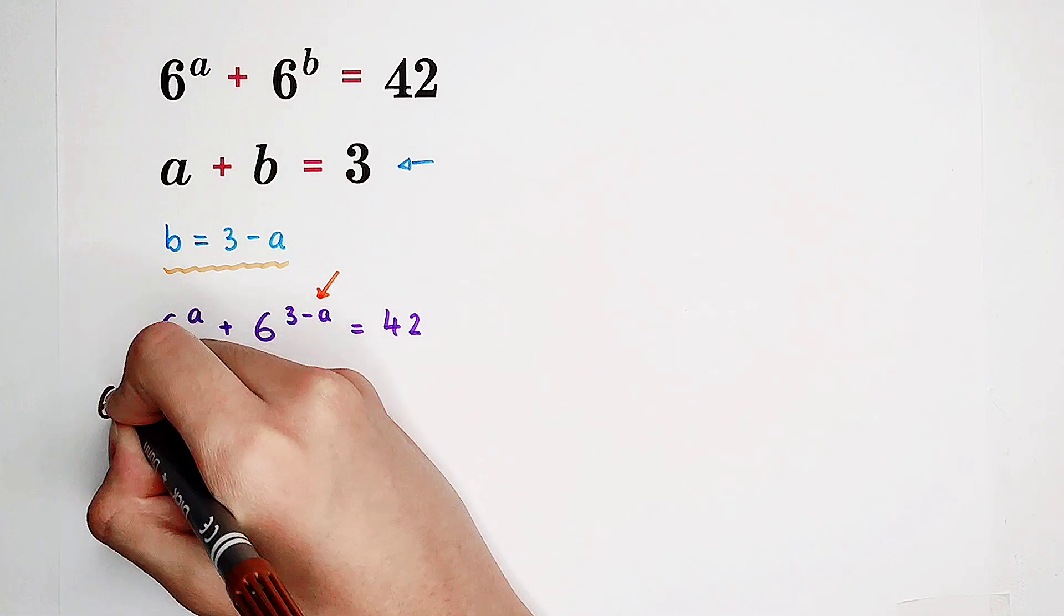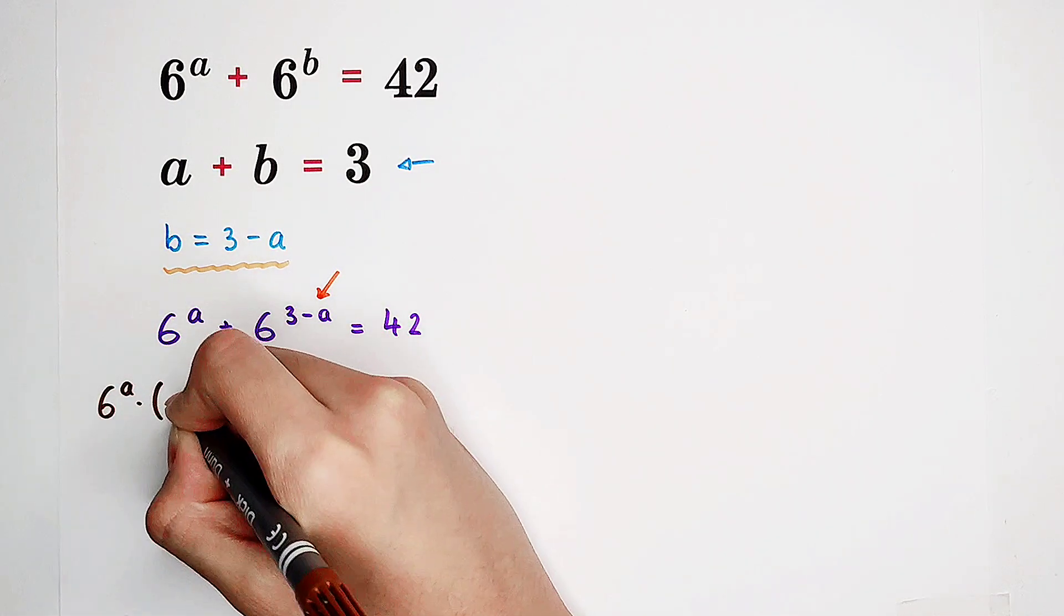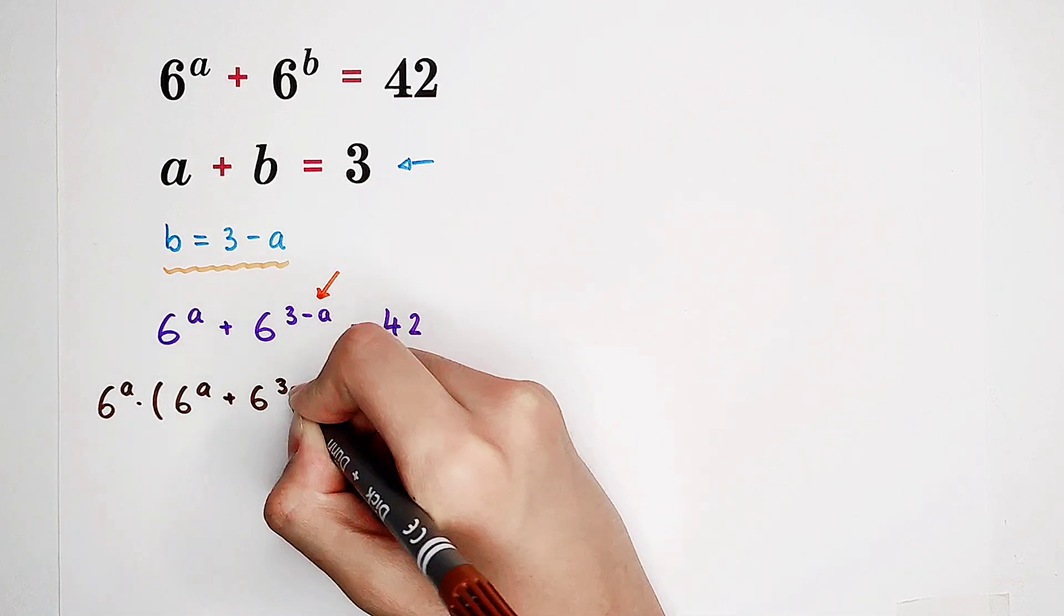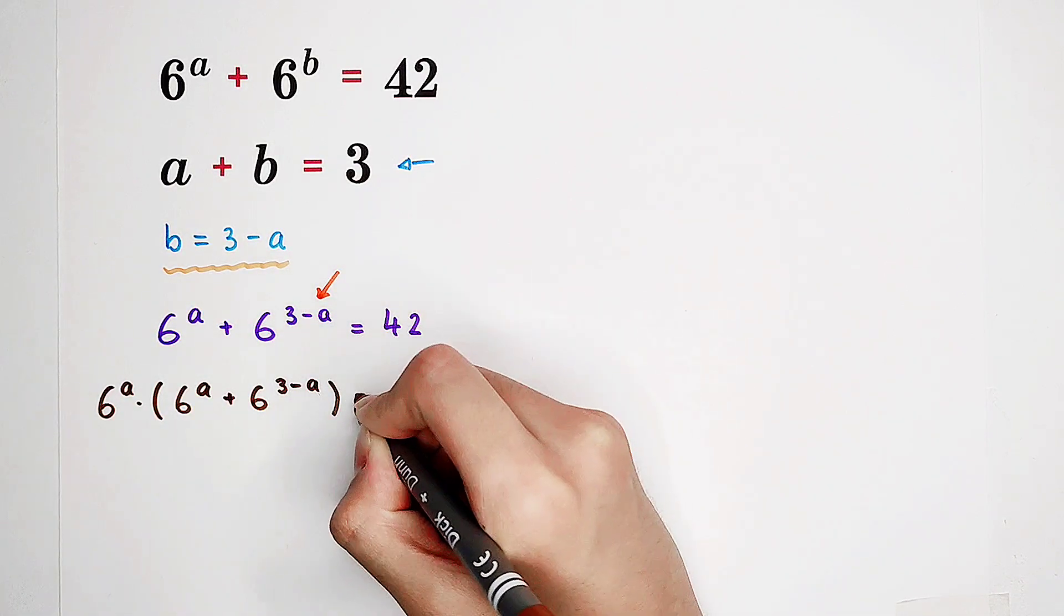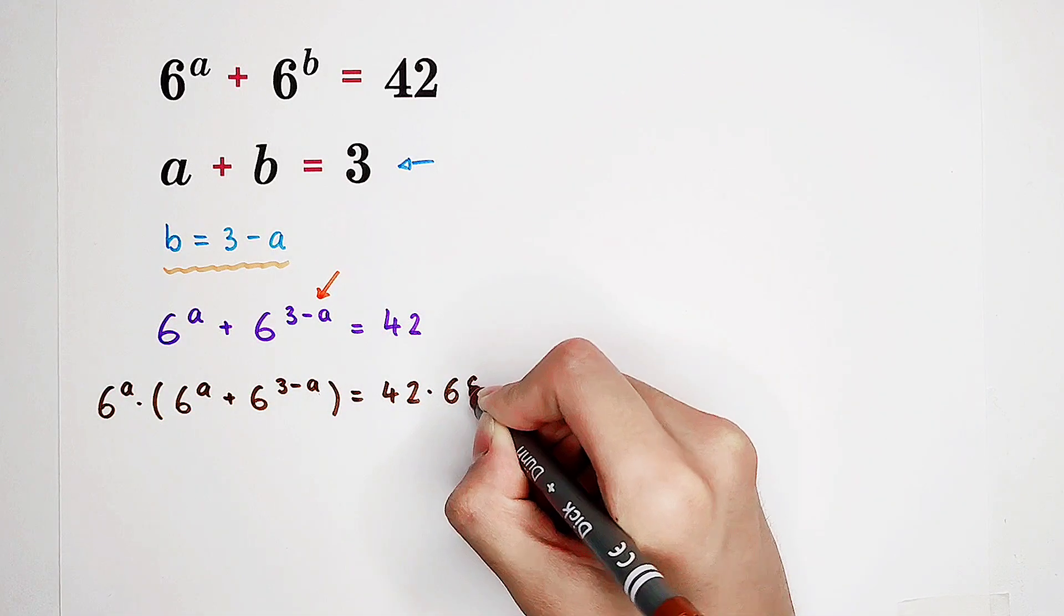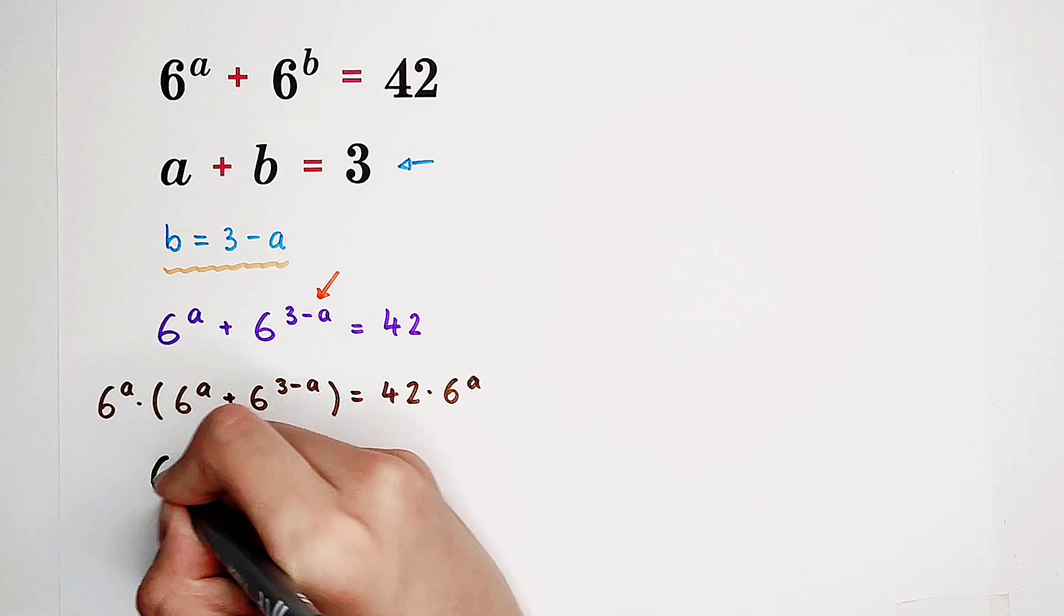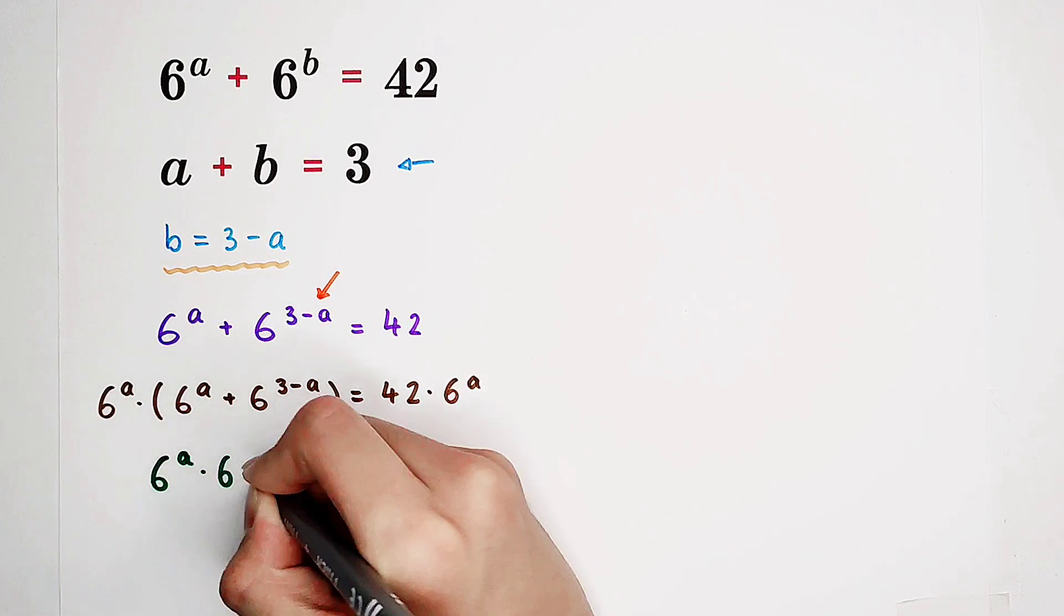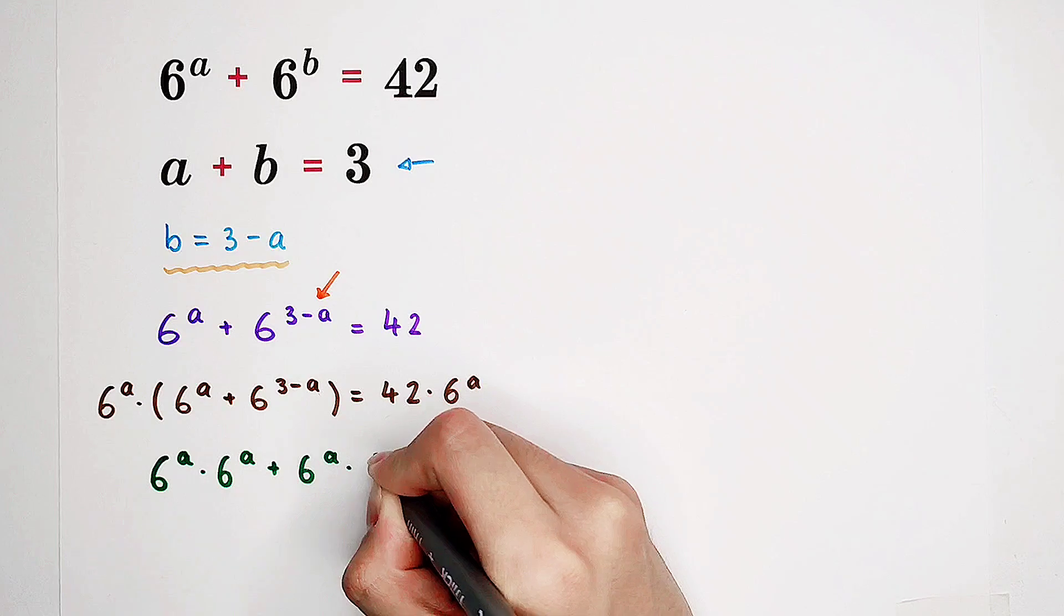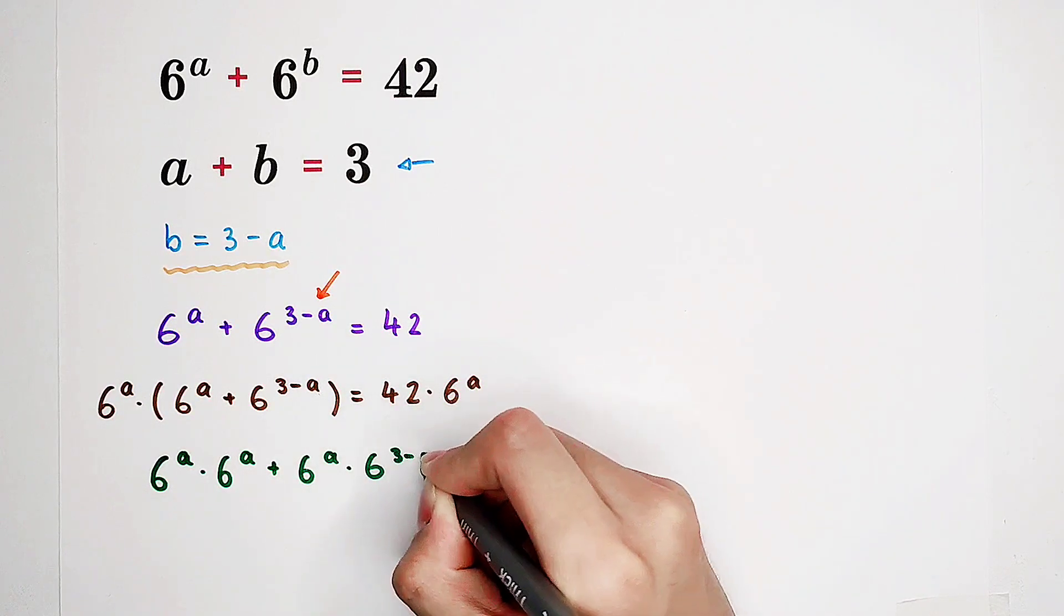So, multiplying the both sides by 6 to the power of A. This is just 6 to the power of A times 6 to the power of A plus 6 to the power of A times 6 to the power of 3 minus A.